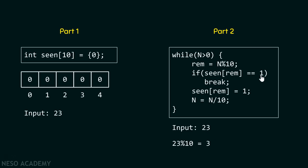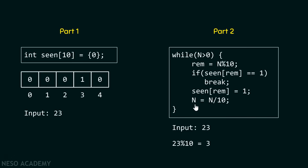Checking seen[rem] equals 1 tells us whether we have seen this digit before. For rem equal to 3, we go to index 3, which contains 0. Since 0 is not equal to 1, the condition is not satisfied — we have not seen this digit before. So we proceed and replace the value 0 at that index with 1, marking that digit as seen. We then divide 23 by 10, store the quotient 2 in n, and loop again.